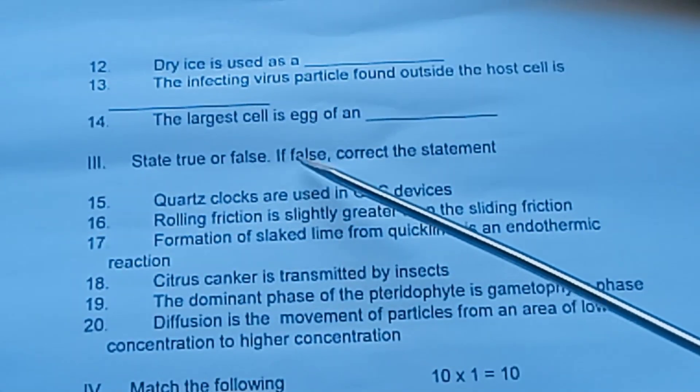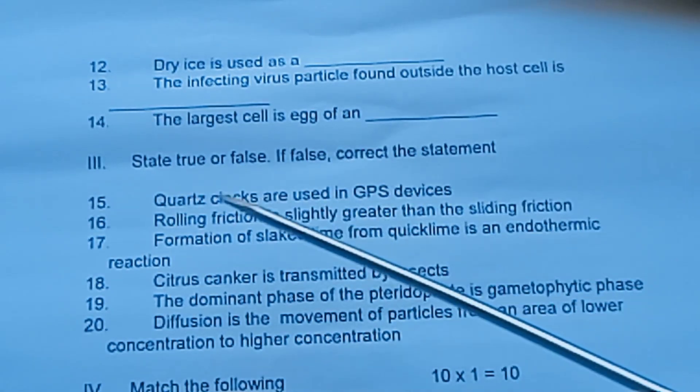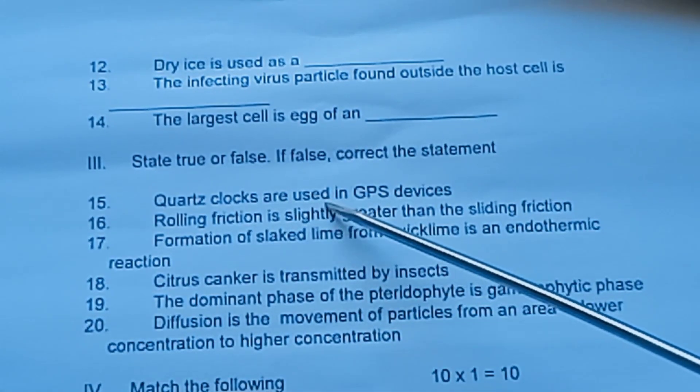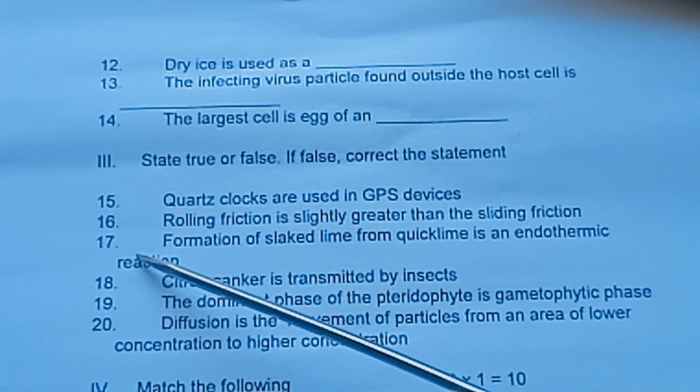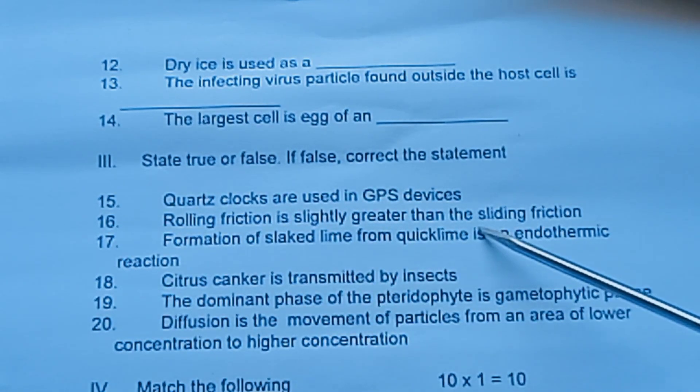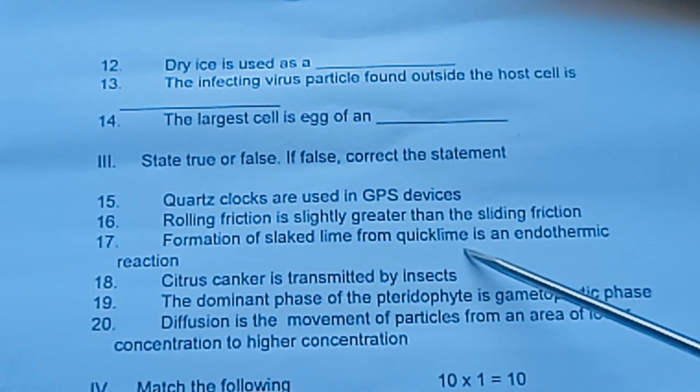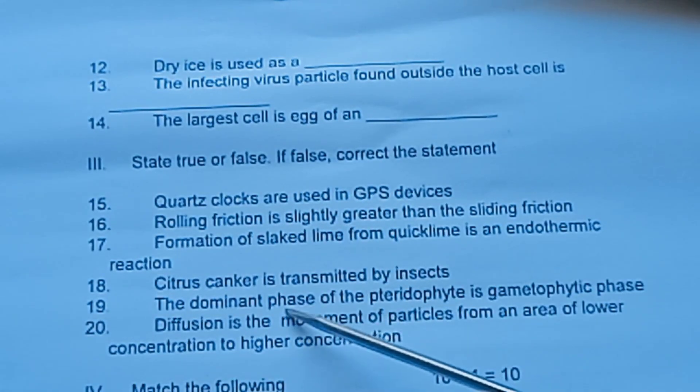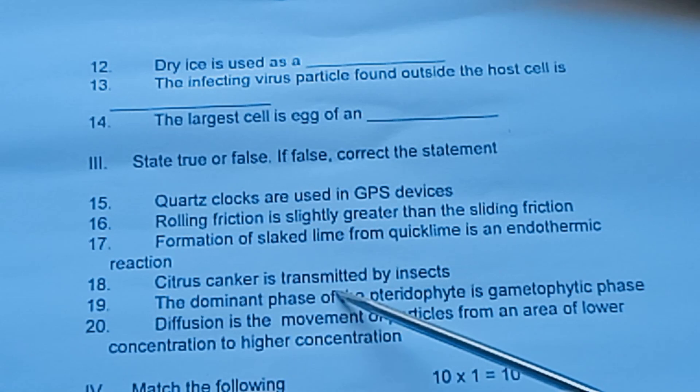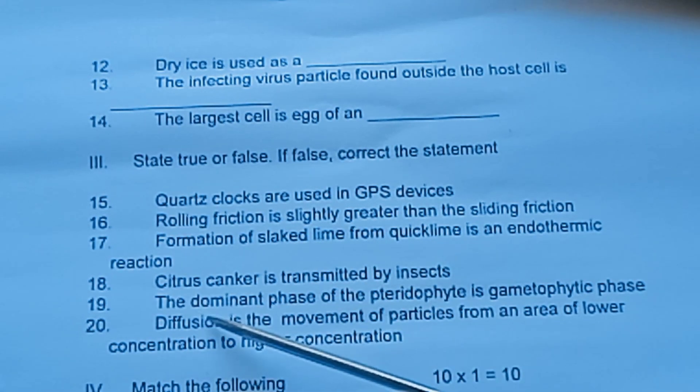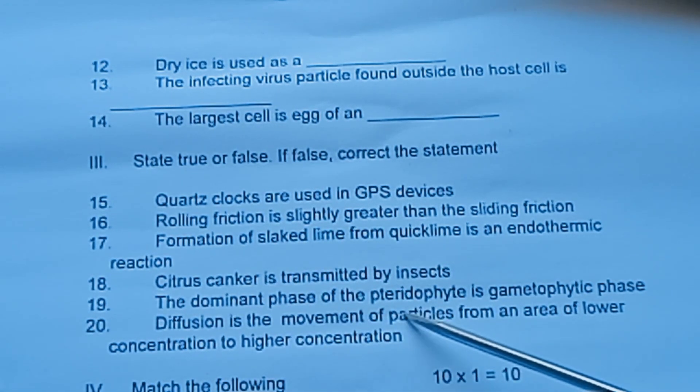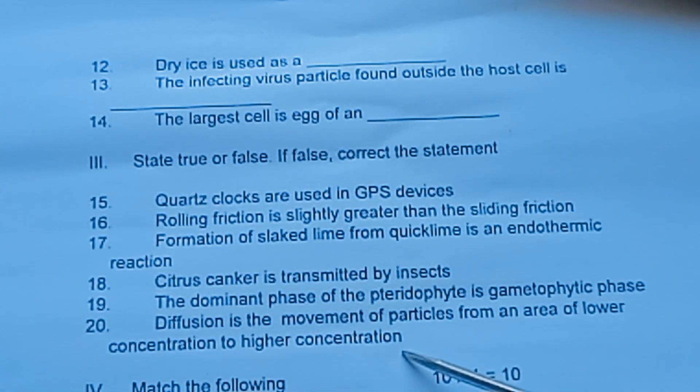Question 11: Dash is the basic material to manufacture urea. Question 12: Dry ice is used as dash. Question 13: The infecting virus particle found outside the host cell is dash. Question 14: The largest cell is dash. Formula 3: State true or false. If false, correct the statement. Question 15: Quartz clocks are used in GPS devices. Question 16: Rolling friction is slightly greater than the sliding friction. Question 17: Formation of slaked lime from quick lime is an endothermic reaction. Question 18: Citrus canker is transmitted by insects. Question 19: The dominant phase of the pteridophyte is gametophytic phase. Question 20: Diffusion is the movement of particles from an area of lower concentration to higher concentration.